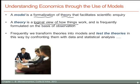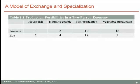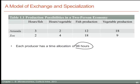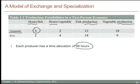Let's get to a numerical example which develops a model of the economy. Here we have a table with two individuals: Amanda and Zoe. Each one of them works a 36-hour week, so each has 36 hours to devote to the tasks facing them. The numbers in the chart refer to the hours devoted to each activity and the amount of production each can generate. The number three indicates that Amanda requires three hours to catch fish.